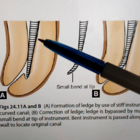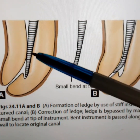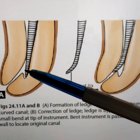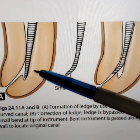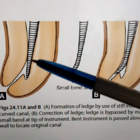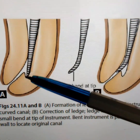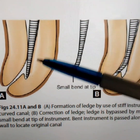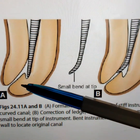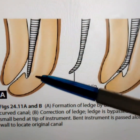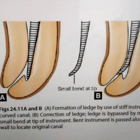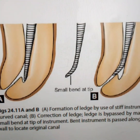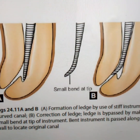The ledge is formed due to a stiff instrument or stiff file which was not pre-bent previously. This stiff instrument has made this ledge due to the curvature of the canal. As you can see, the roots are curved, and the ledge is formed due to the presence of curved canals.